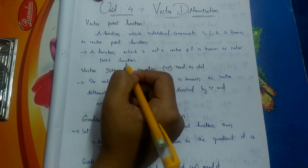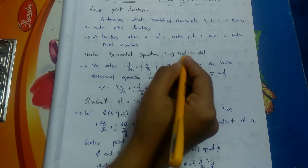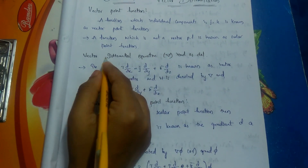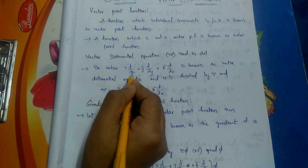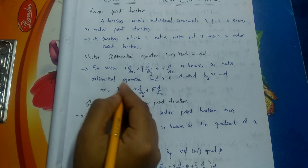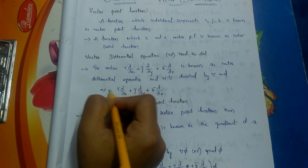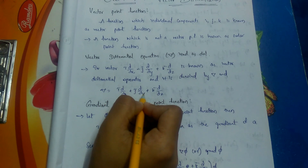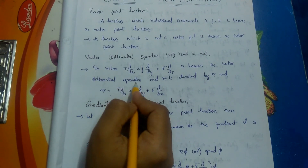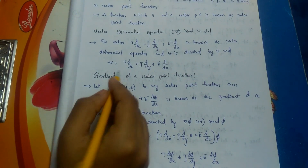The vector differential operator is called del, represented as an inverted triangle. The vector differential operator del is defined as: i-bar ∂/∂x plus j-bar ∂/∂y plus k-bar ∂/∂z. This del formula is known as the vector differential operator.